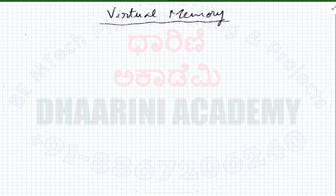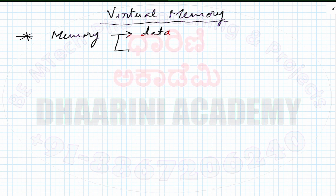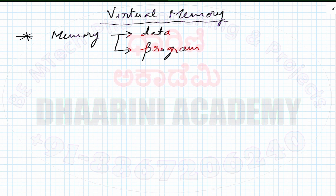Let's come to the basics of memory. Why is memory required? Memory is required to store two things: one is the data, and the second one is the program. If you want to run a program, you have to provide the data so that the program can run its algorithms on the data, process it, and provide a result. The result is also data, and you are going to store the data back in the memory. Storage is a very important aspect of programming that is supported by the memory.